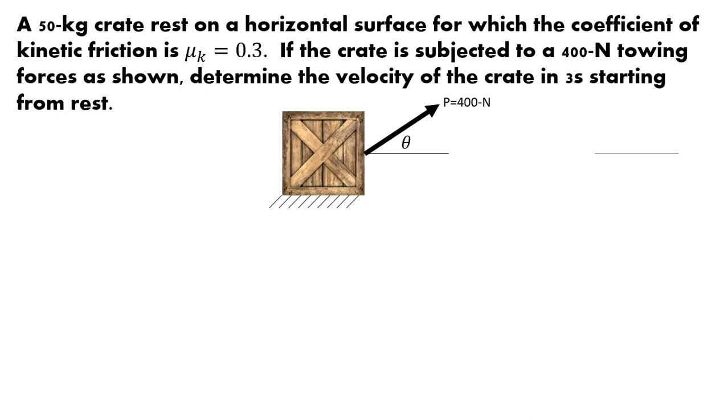Hi, this is Professor Cummings, and I wanted to use this example to show you an application of Newton's second law, F equals ma, as well as how it dovetails in with the kinematic equations. So what we have here is a 50 kilogram crate that is resting on a horizontal surface, and we know the horizontal surface has a coefficient of friction of 0.3, a kinetic coefficient of friction. Now if the crate is subjected to a 400 Newton towing force, which is towing at an angle of theta, determine the velocity of the crate in three seconds from starting from rest.